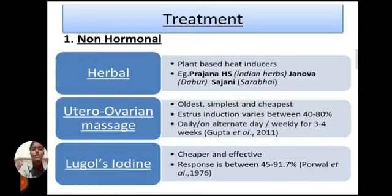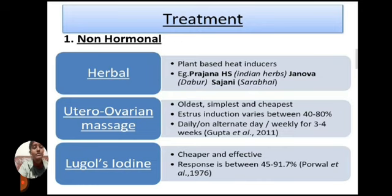Treatment — Non-hormonal treatments include herbal and physical methods. Plant-based products that induce estrus include Prajana HS, Genova, and Sejani. Utero-ovarian massage is the oldest, simplest, and cheapest method; estrus induction rate varies between 40 to 80%, and it can be done daily, on alternate days, or weekly for 3 to 4 weeks. Lugol's iodine is a cheaper and effective method with a response rate of 45 to 91.7%.